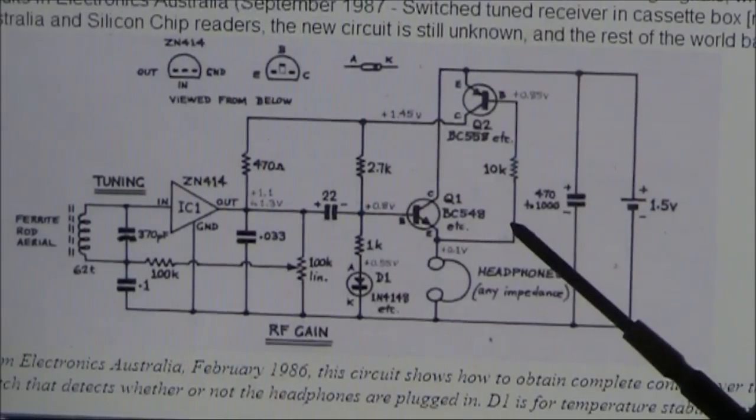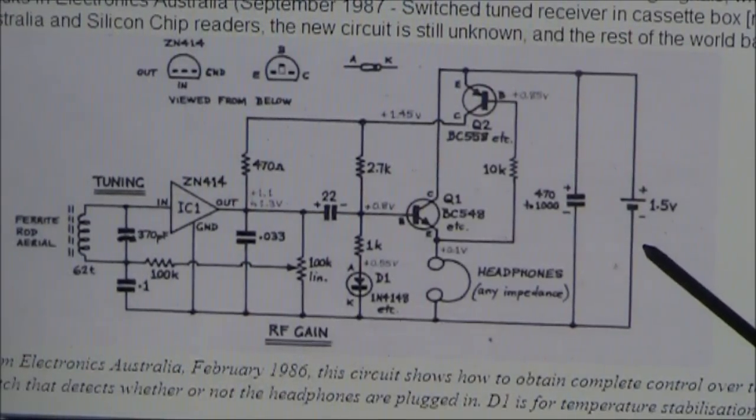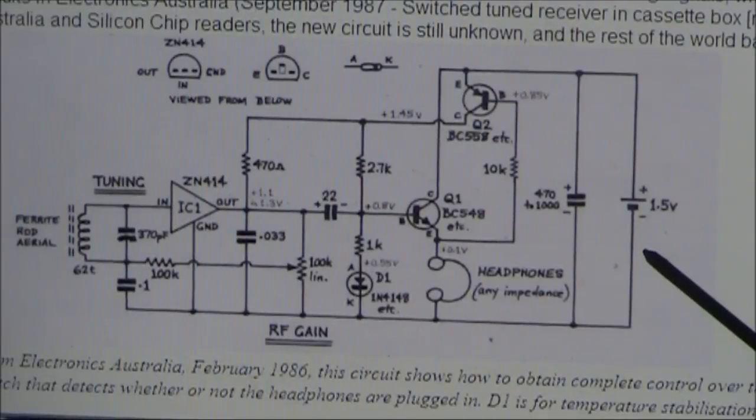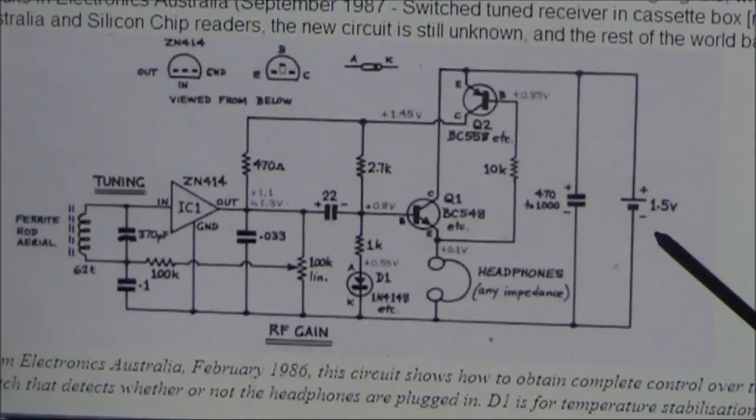It's something I'd definitely be using in other QRP projects. As for the power supply, it's just a 1.5 volt AA or AAA battery. Current consumption is around 2.5 milliamps. If you assume a battery capacity of 2500 milliamp hours, that's 1000 hours of operating on just the one battery.